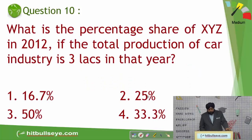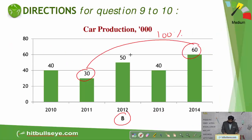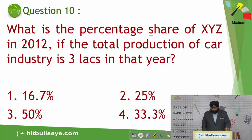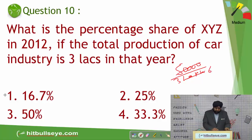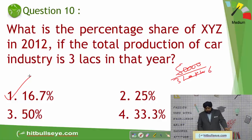Let us move on to the next question. What is the percentage share of XYZ in 2012 if the total production of car industries is 3 lakh in that year? So in 2012, the share of XYZ is 50 in 1000, meaning 50,000. We are asked what 50,000 is as a percentage of 3 lakh, which is exactly 1 by 6 = 16.66, so 16.7 is the answer — first option. This is a very simple combination graph which on first look appeared difficult but the questions are easy.